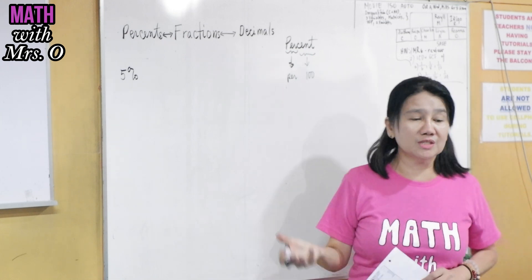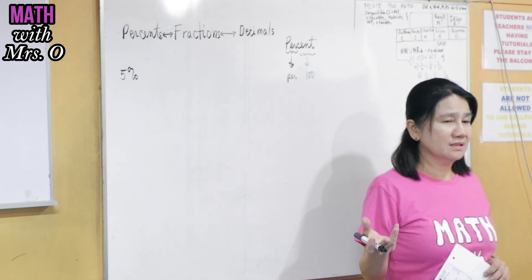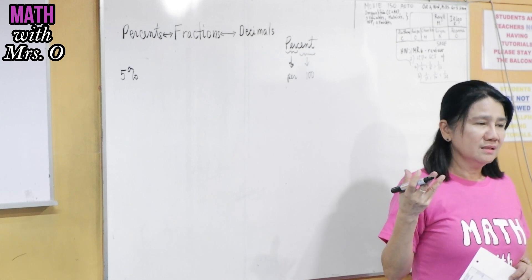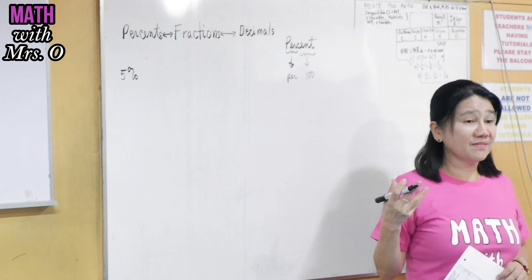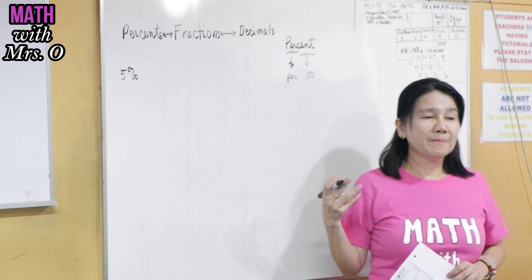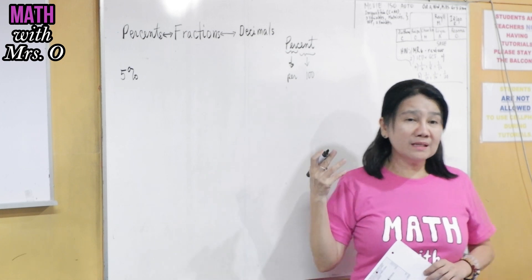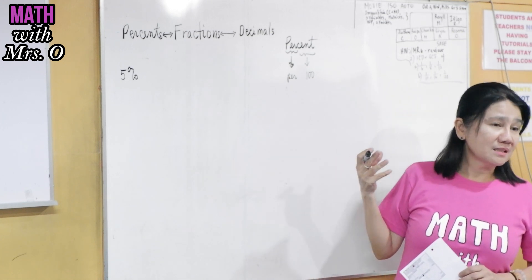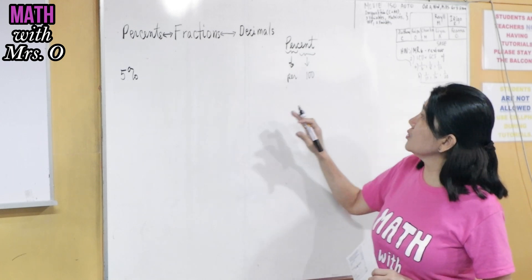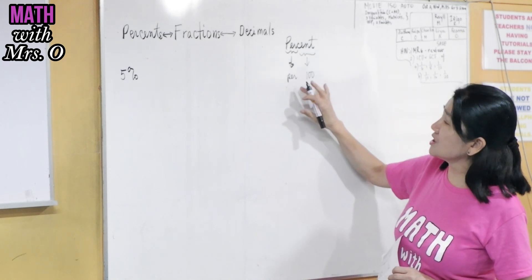Century. Century is 100 years. What else? Centavos. What else? Centennial. Centennial is 100 year anniversary. What else? Centipede. Centipede is 100 feet. So we know too well that percent is just per hundred.